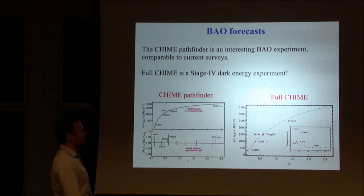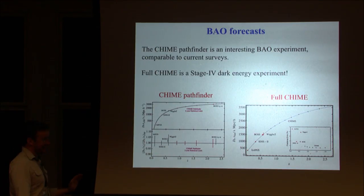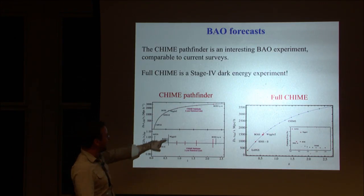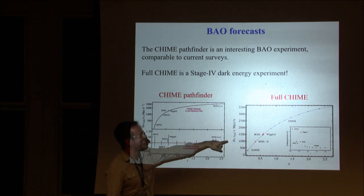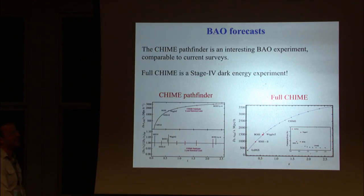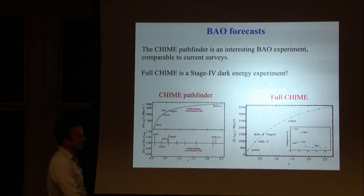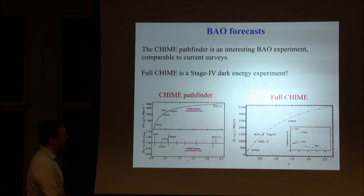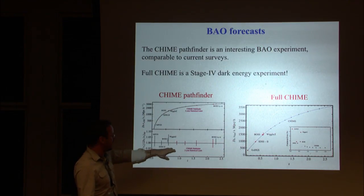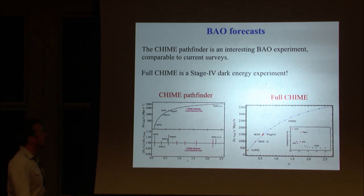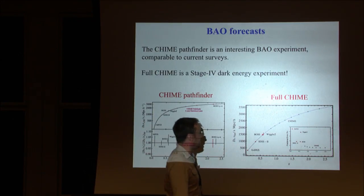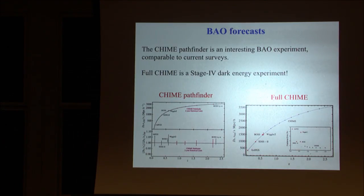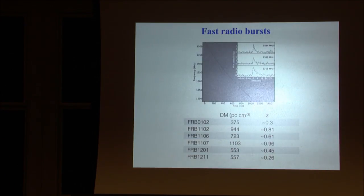The forecast from CHIME, if the foreground removal goes smoothly, these error bars do include foreground uncertainty. The CHIME pathfinder is an interesting dark energy experiment. The BAO measurements would be comparable to current experiments. Full CHIME would be like a stage four dark energy experiment, on par with experiments like LSST.